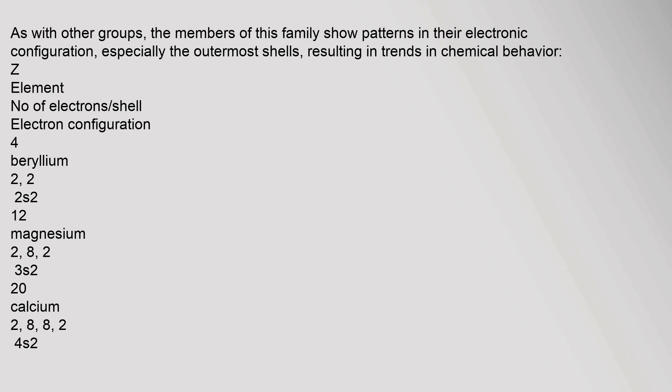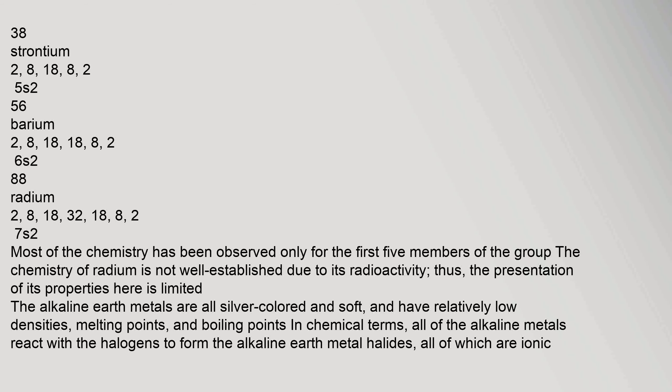The electron configurations are: beryllium [He] 2s²; magnesium [Ne] 3s²; calcium [Ar] 4s²; strontium [Kr] 5s²; barium [Xe] 6s²; radium [Rn] 7s². Most of the chemistry has been observed only for the first five members of the group. The chemistry of radium is not well established due to its radioactivity, so the presentation of its properties is limited.